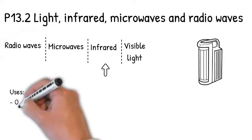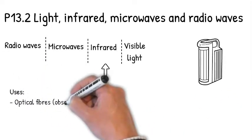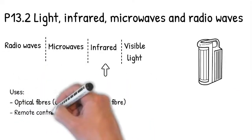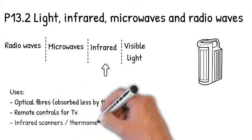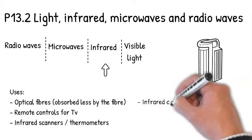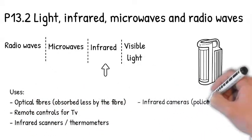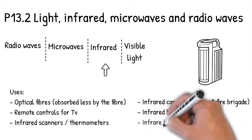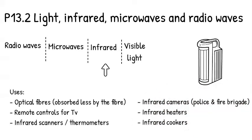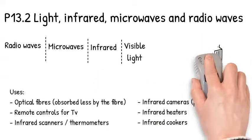Its uses include optical fibers, because it is absorbed less by the fiber than visible light. Remote controls for your TV. Infrared scanners or thermometers. Infrared cameras used by the police and fire brigade. And infrared heaters and infrared cookers.